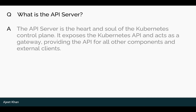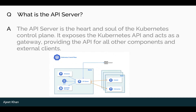What is the API Server? The API Server is the heart and soul of the Kubernetes control plane. It exposes the Kubernetes API and acts as a gateway, providing the API for all other components and external clients. As you can see in the diagram, all components are interacting with the API component.